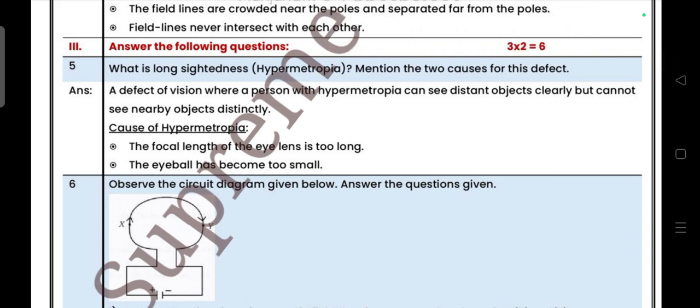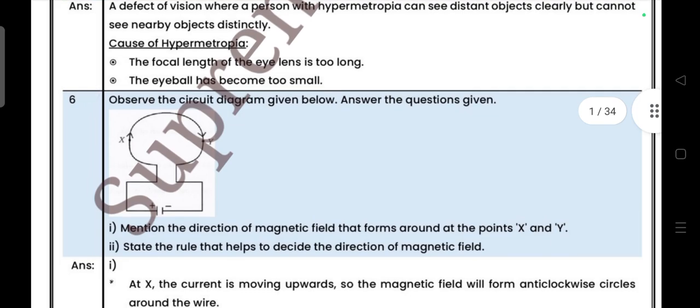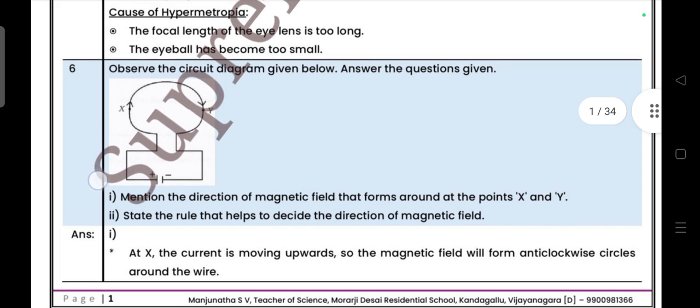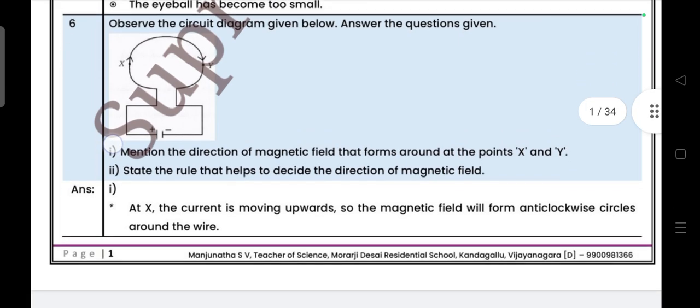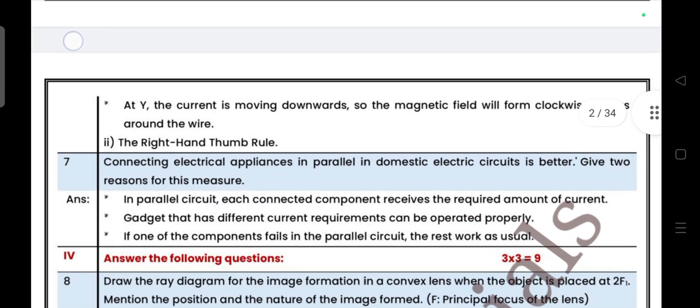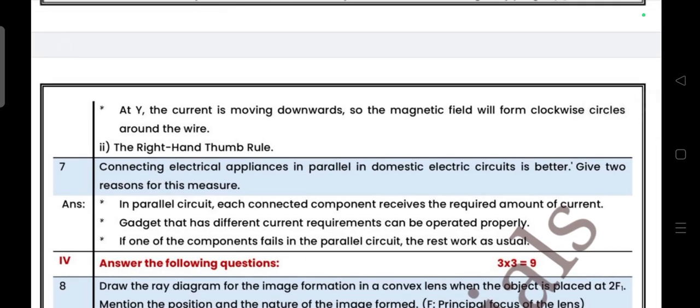Observe the following diagram and give the answers. Mention the direction of magnetic field that forms around at the points X and Y. Answer is: at X, current is moving upwards, so magnetic field forms anticlockwise circles around the wire. State the rule to help decide the direction of magnetic field. The rule is right-hand rule.